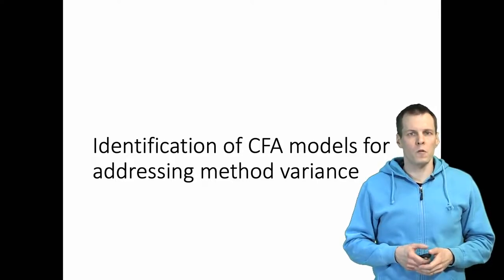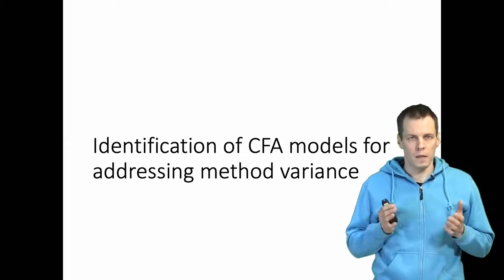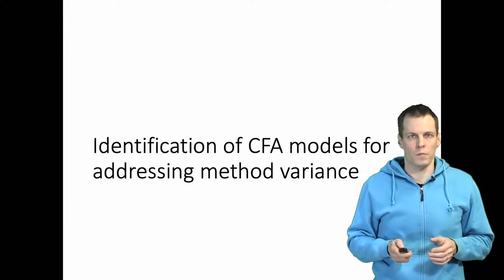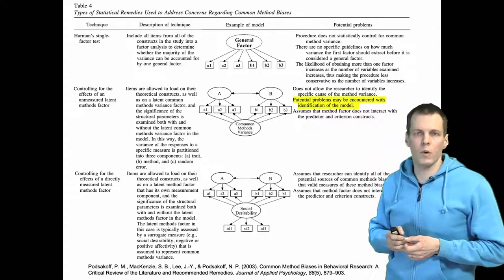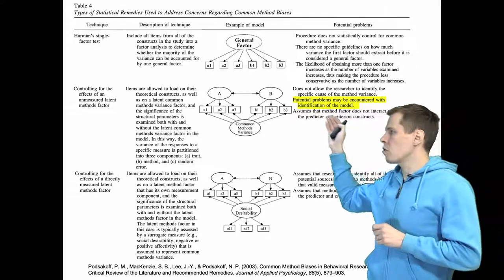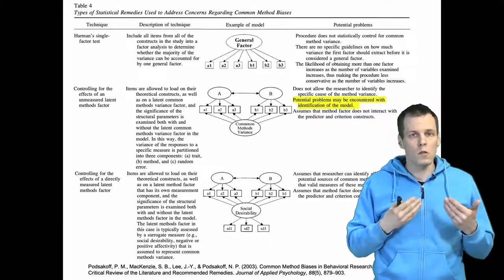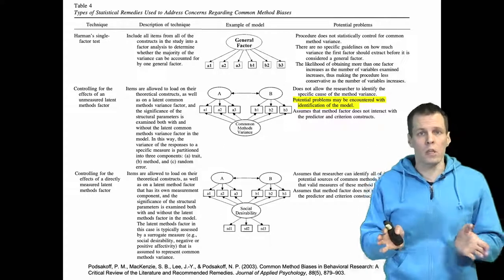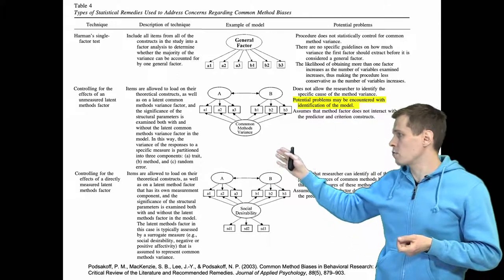Conflictory factor analysis models can be useful for addressing method variance concerns. However, for using these models effectively we need to consider identification and also interpret the results properly. In this video I'll talk about the identification of these models. The kinds of models we're talking about are method variance models where indicators load on factors representing constructs of interest and also a source of method variance. Whether a single source is realistic is a question I'll address at the end of the video, but for now let's assume this kind of model is useful.